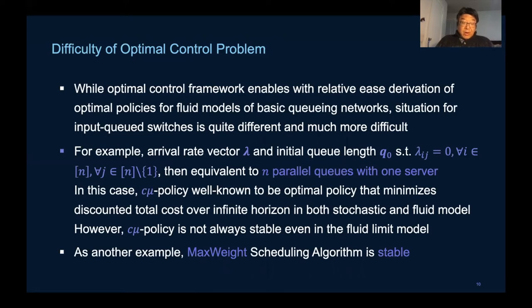For example, one instance is equivalent to parallel queueing systems where we know that C-mu policy is optimal, but for our formulation in general C-mu may not even be stable, meanwhile max weight policy is always stable.